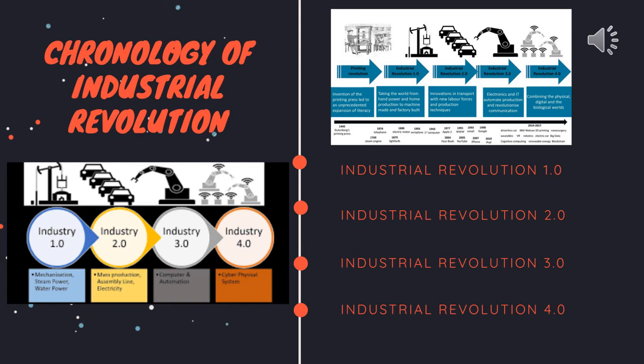Henry Ford took the idea of mass production from a slaughterhouse in Chicago. The third Industrial Revolution began in the 18th century through the partial automation using memory programmable controls and computers. Since the introduction of these technologies, we are now able to automate an entire production process without human assistance. Known examples of this are robots that perform programmed sequences without human intervention.